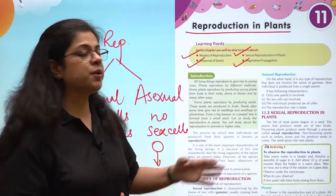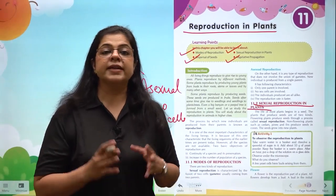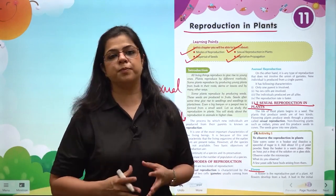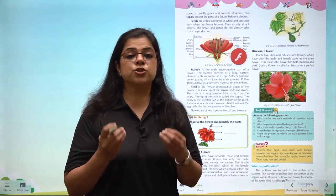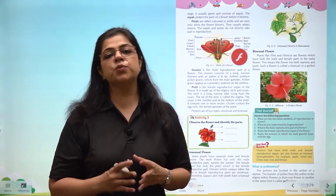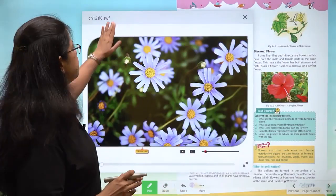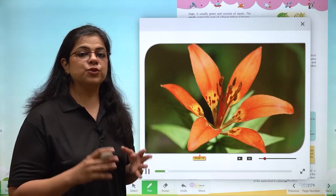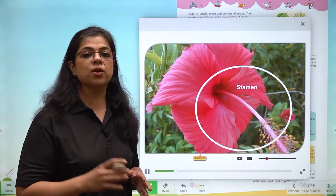Coming next to sexual reproduction in plants — the reproductive organ of a plant is the flower. We all know that a flower is the most attractive part of a plant. It has beautifully colored petals, a fragrance, and sweet juice that attracts insects. The flower has a male part which is the stamen and a female part which is called the pistil.